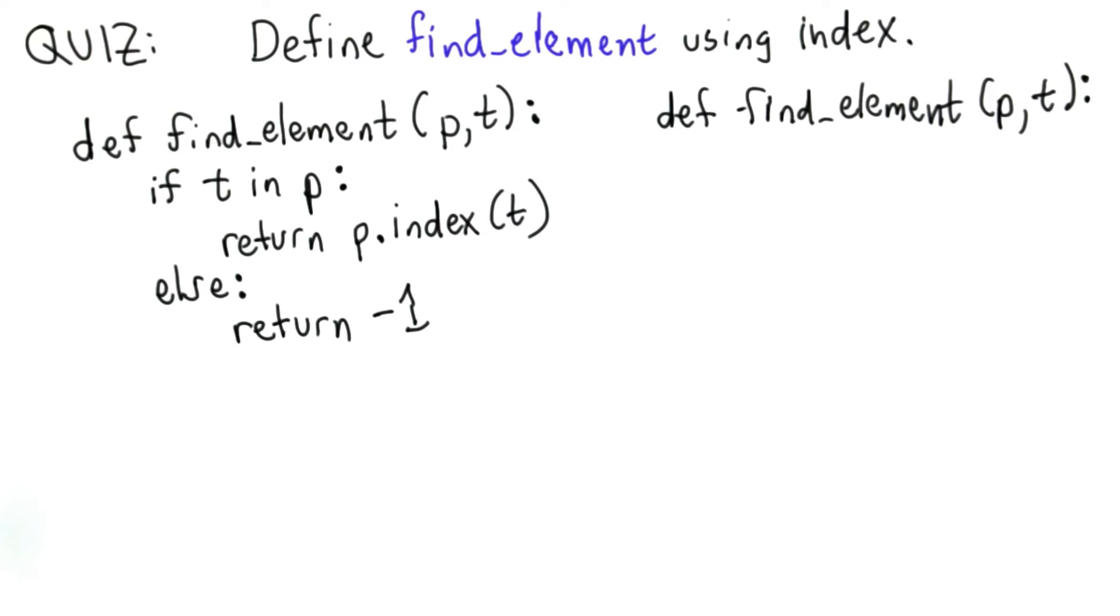Here's another way we might define findElement using index. Instead of checking if t is in p this time, we'll check if t is not in p. If t is not in p, well then we know the result is negative 1. We can return negative 1 right away.